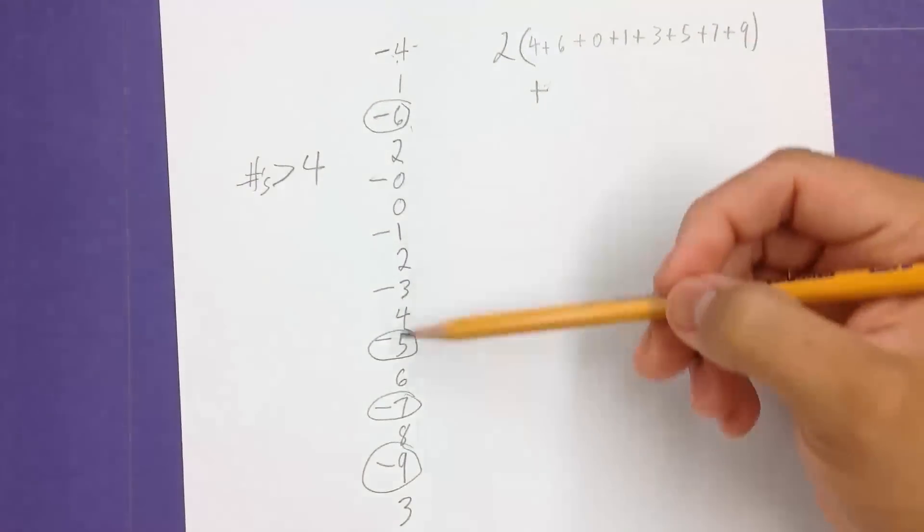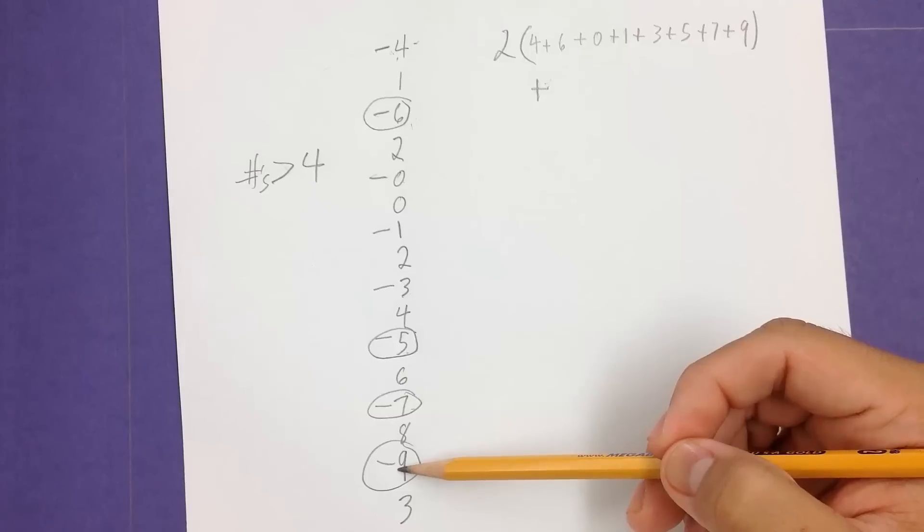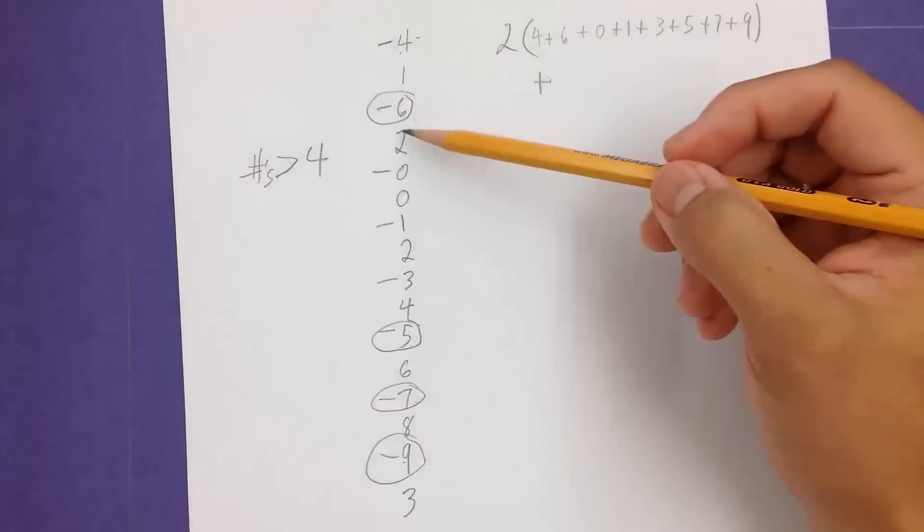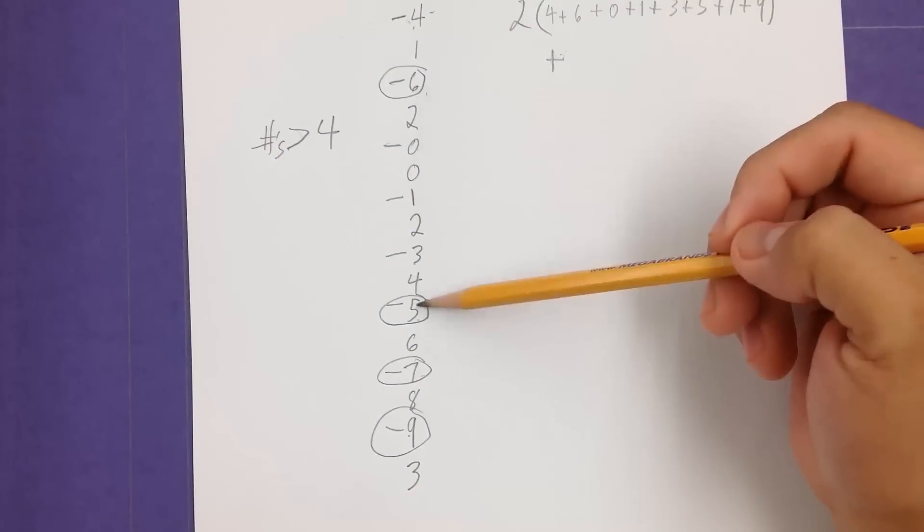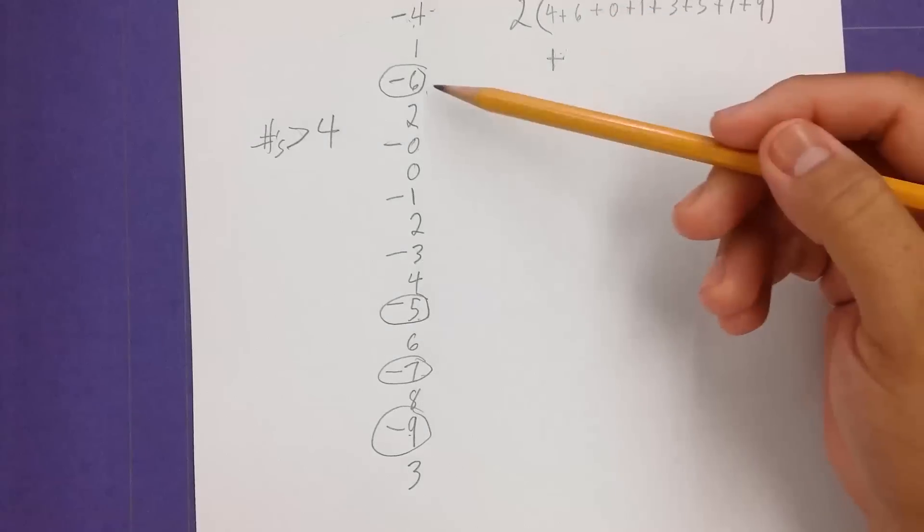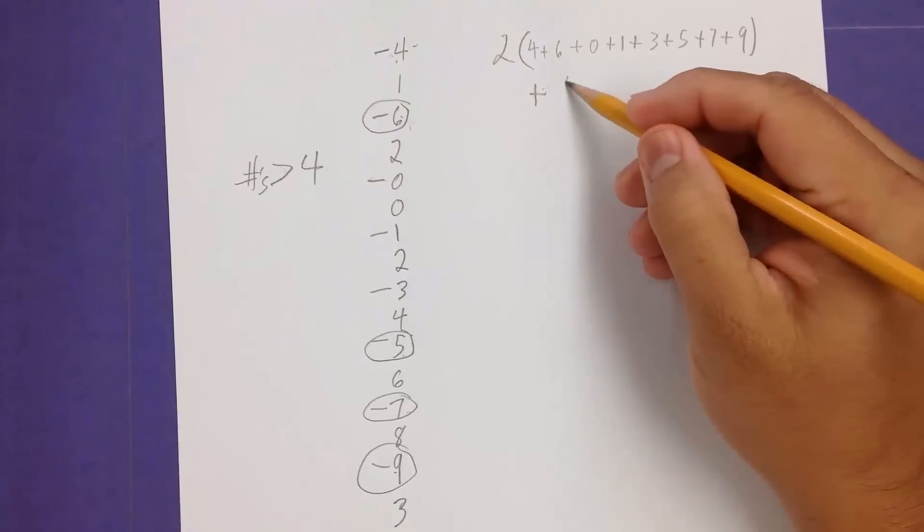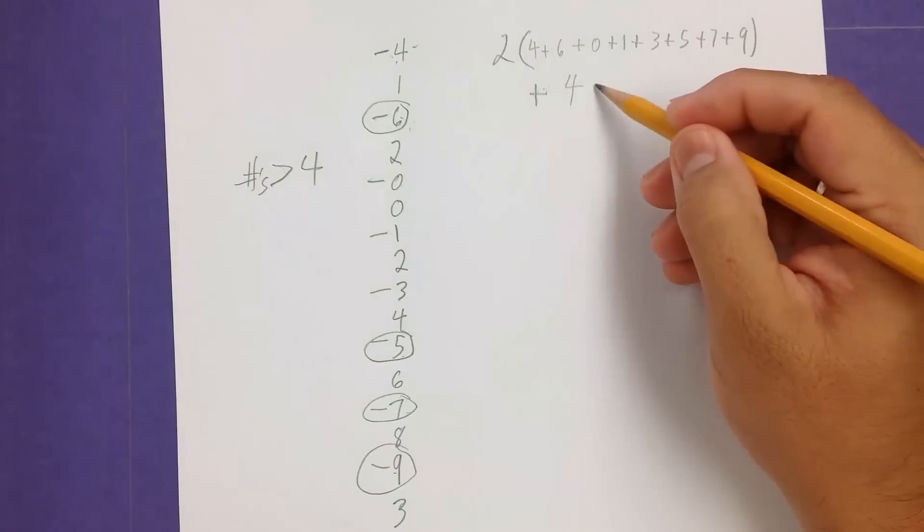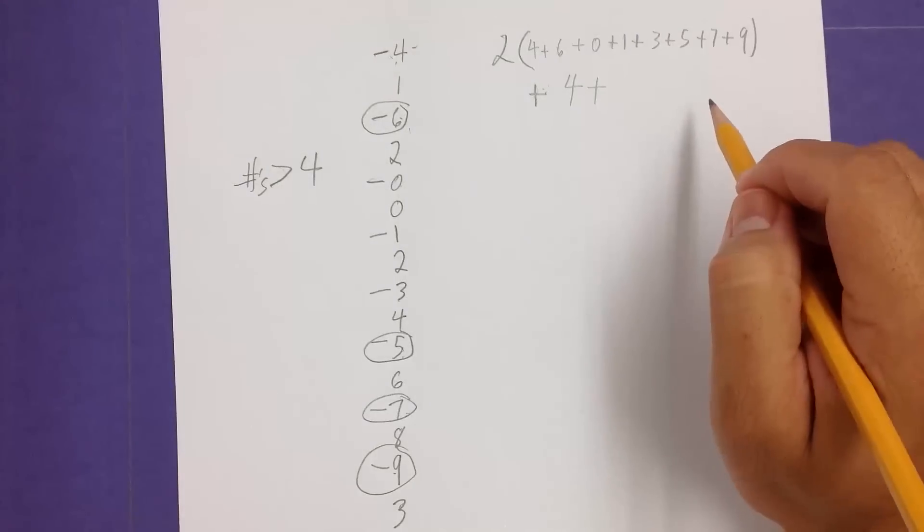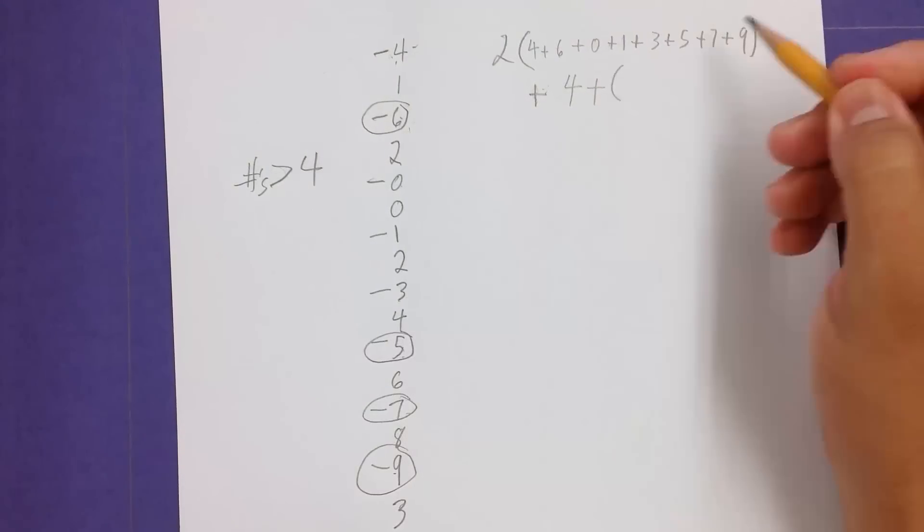So right here, we have 1, 2, 3, 4 of them. So we look at the number of numbers that I circled. There's only 4 numbers. We're not going to add them to it. We're just going to take these 4 numbers and say, alright, we're going to add 4 to this total so far.